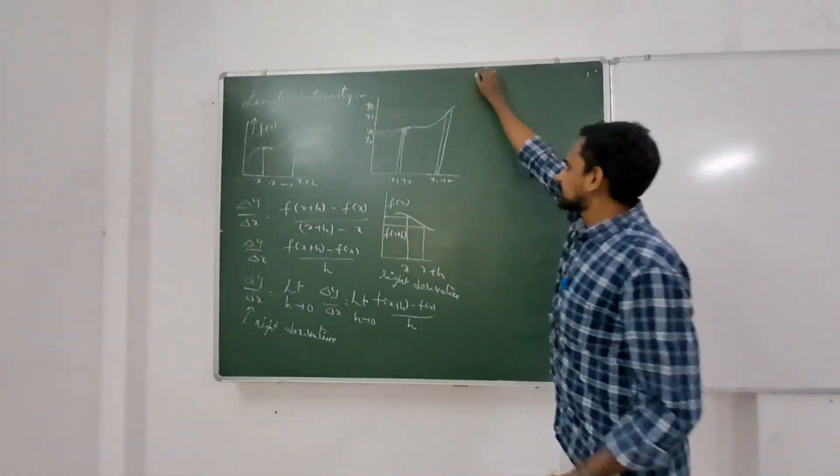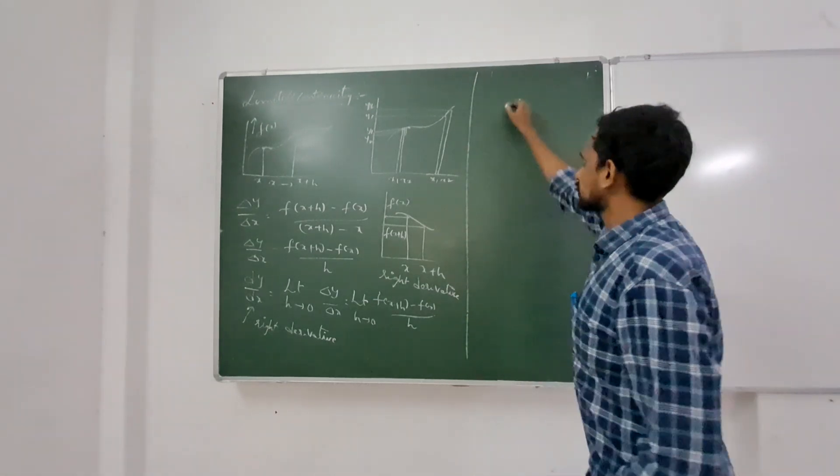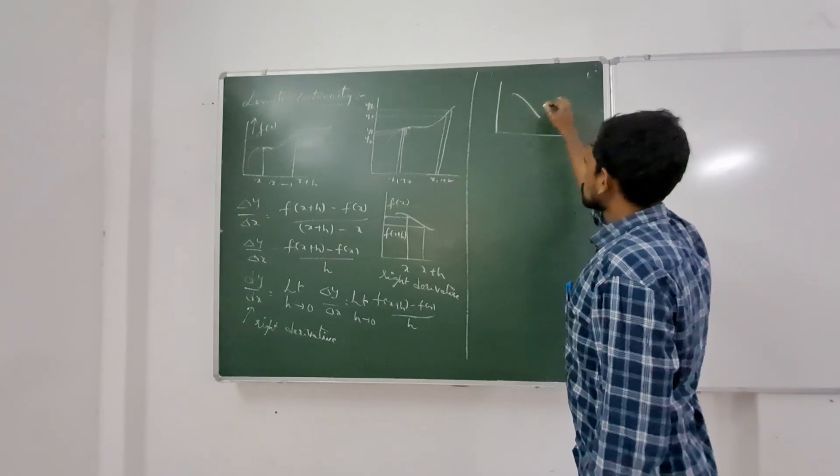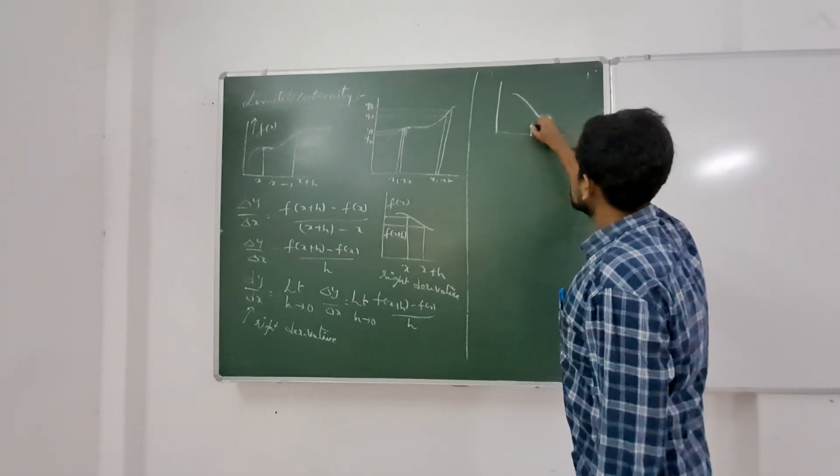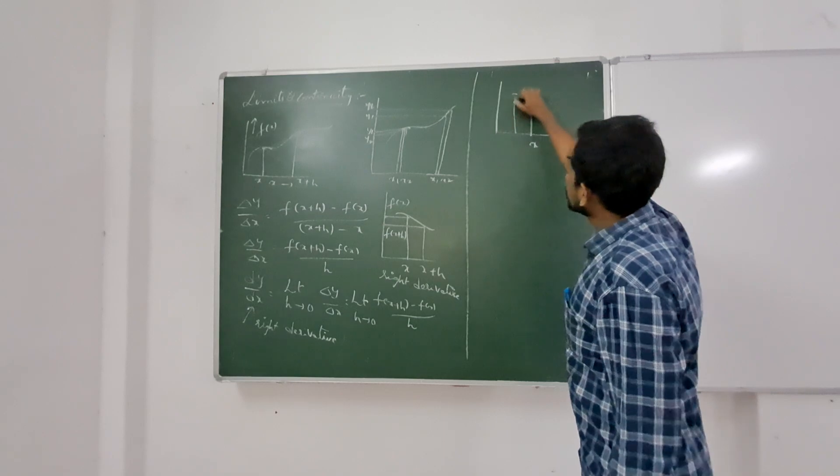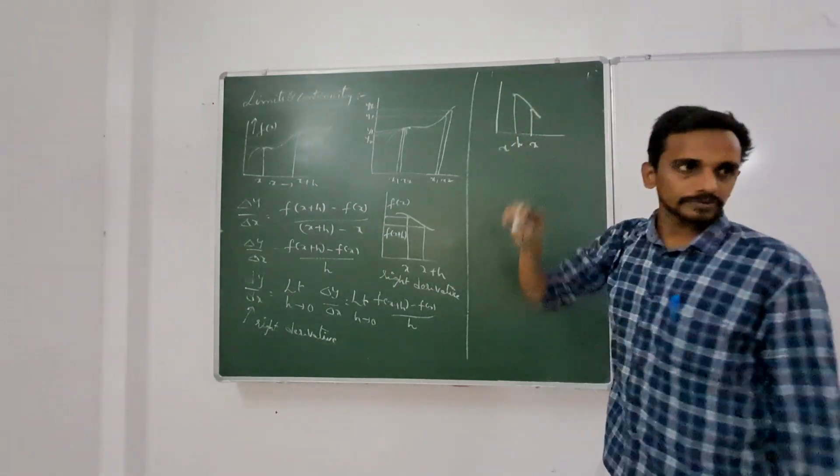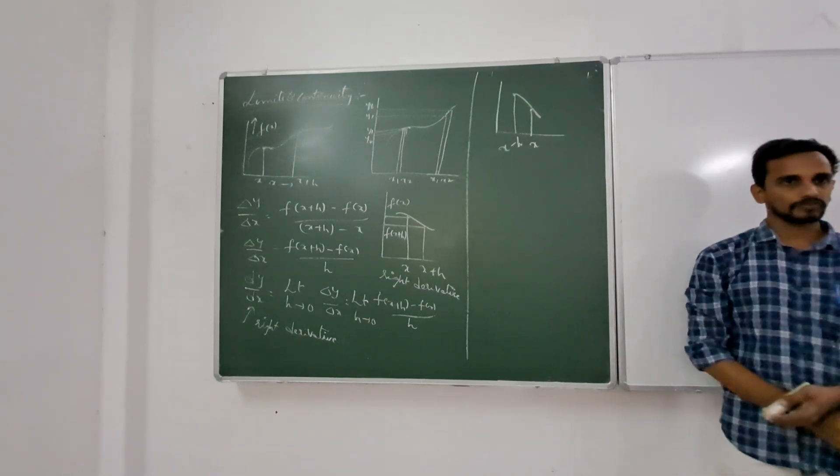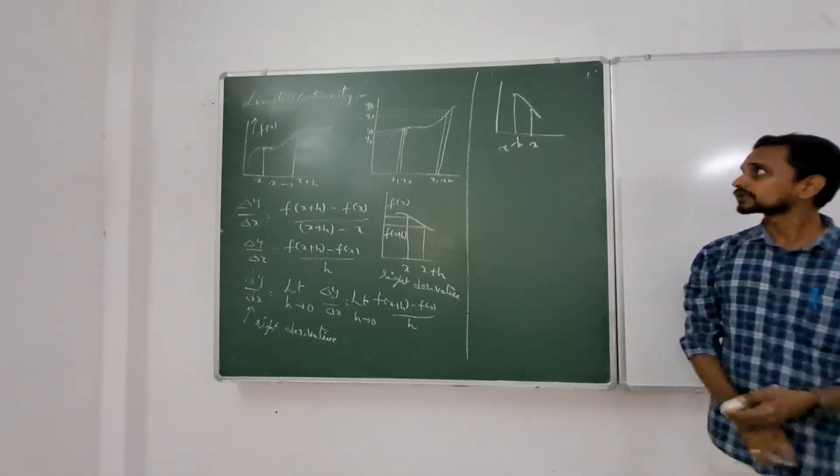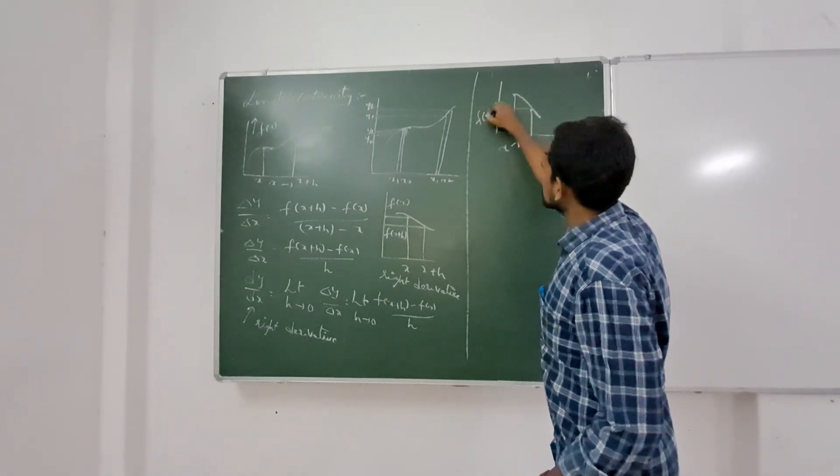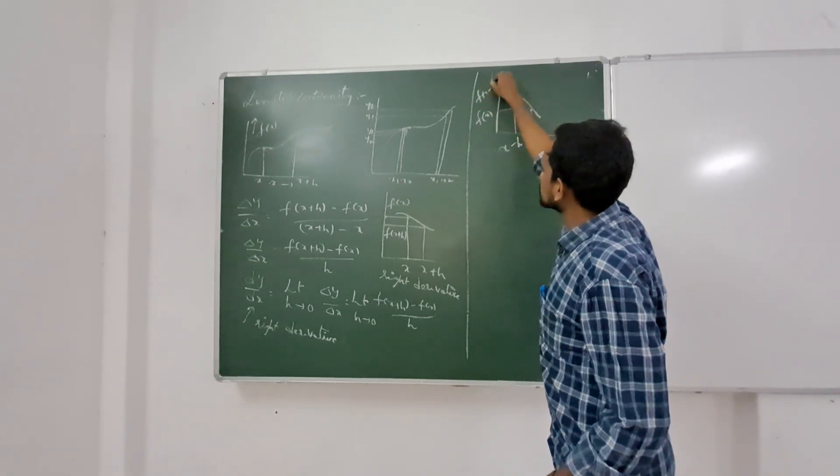The same way we can define the left derivative also if we take the interval towards the left side. So, my first point comes here and the second point comes towards the left side, x minus h. This is f of x. This is f of x minus h.